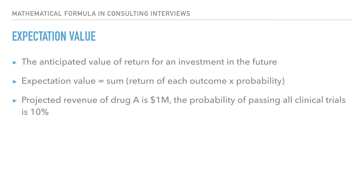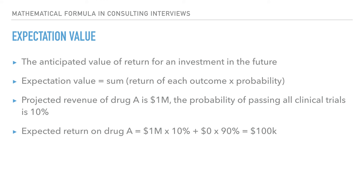For example, if a drug's projected revenue is $1 million and the probability of passing all drug screening is 10%, the expectation value equals: (success rate × projected revenue) + (failure rate × return if the drug fails). That is: ($1,000,000 × 10%) + ($0 × 90%) = $100,000. So the anticipated return on investing in this drug is $100,000.